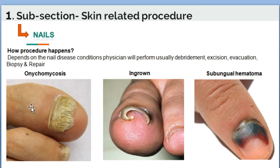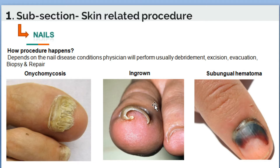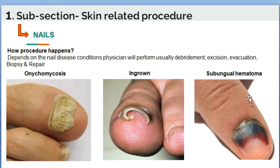The disease conditions you can see in the picture include onychomycosis, ingrown nail, and subungual hematoma — where you can see blood inside the nail. For these conditions, the physician will debride, make an excision for ingrown toenail, or evacuate the blood for subungual hematoma.